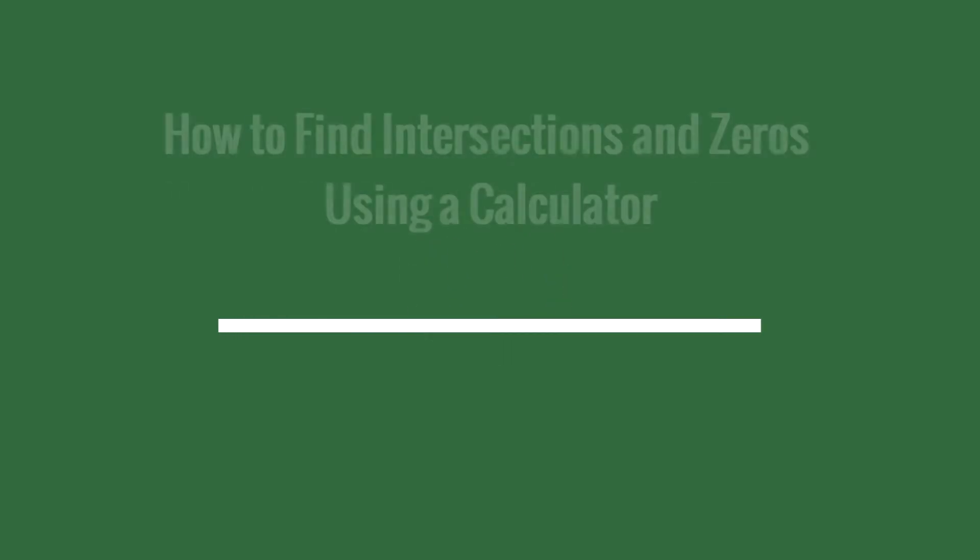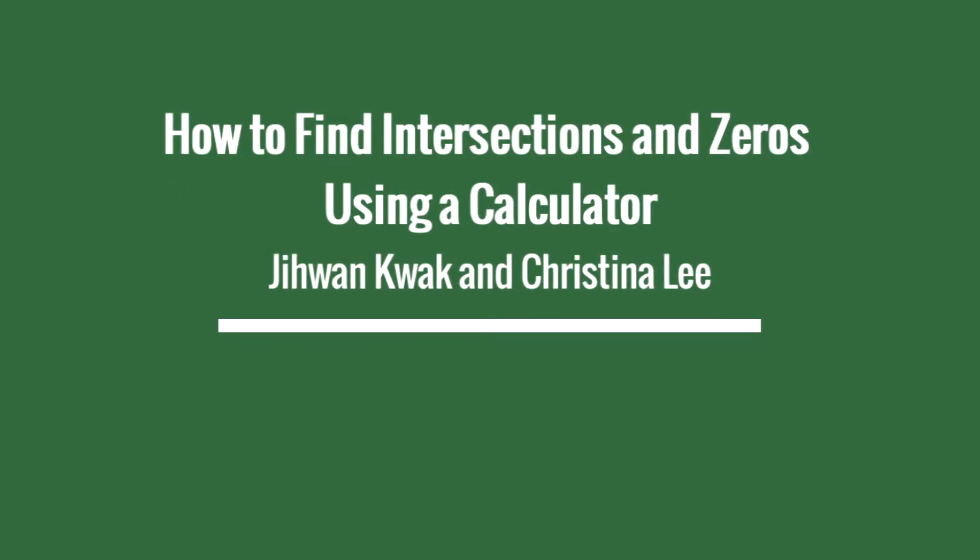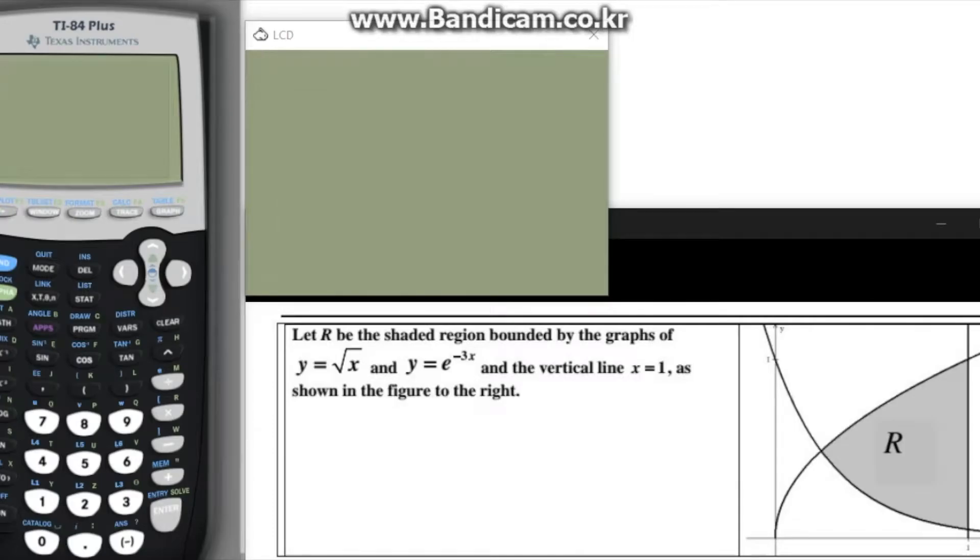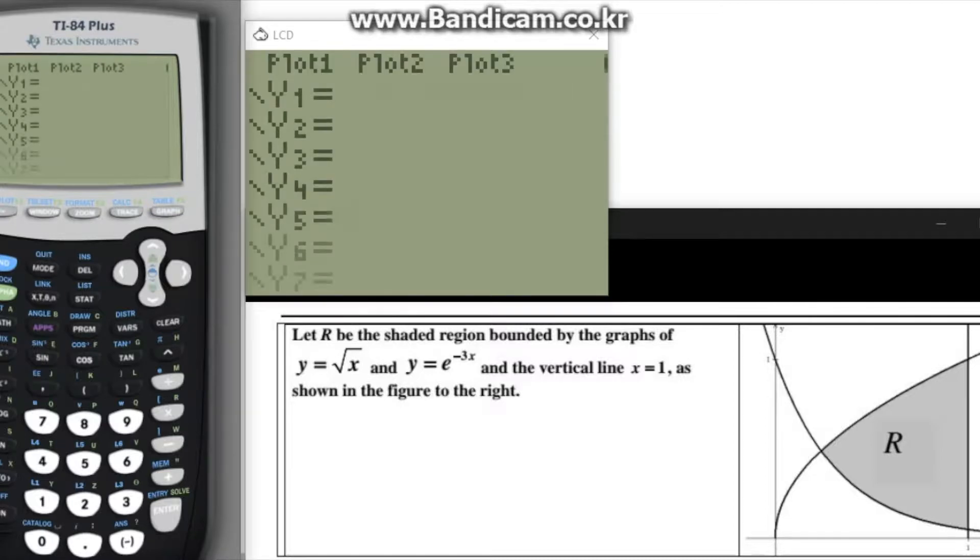Today we'll be teaching you how to find intersections and zeros using a calculator. For our first example, we are given the two equations y is equal to the square root of x and y is equal to e to the negative 3x power.